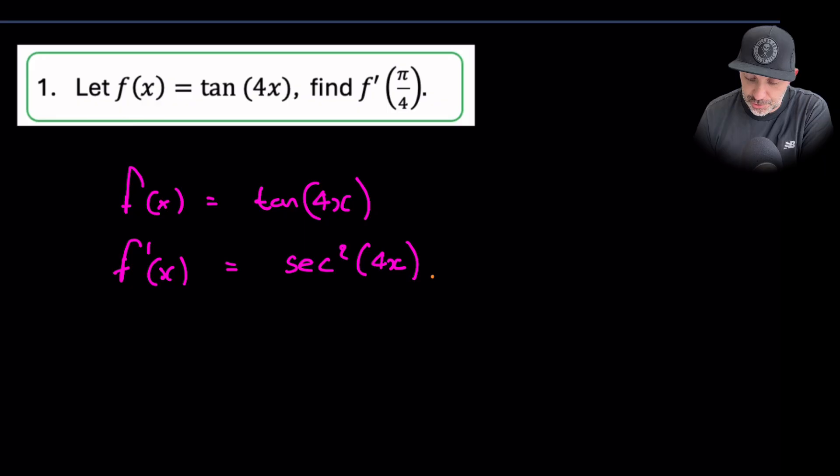But what we must not forget is what I showed you just above, is times by the derivative of this. So the derivative of that is just going to be 4. So our answer is 4 sec squared 4x.